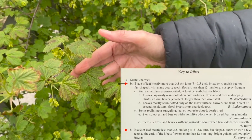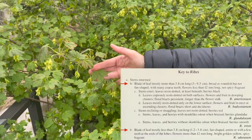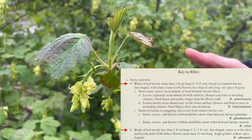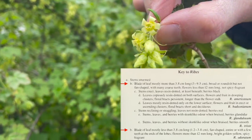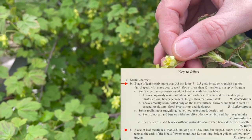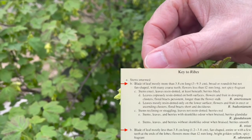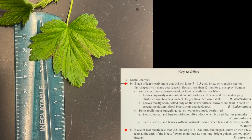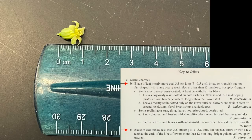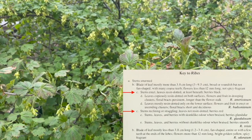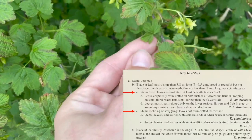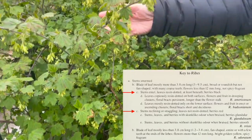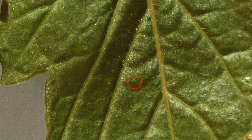Option B: blade of leaf mostly more than 3.8 centimeters long, broad or roundish but not fan-shaped, with many coarse teeth, flowers less than 12 millimeters long, not spicy fragrant. Or B: blade of leaf mostly less than 3.8 centimeters long, fan-shaped, entire or with a few teeth at the ends of the lobes, flowers more than 12 millimeters long, bright golden yellow, spicy fragrant. The leaves are mostly more than 3.8 centimeters long, are broad but not fan-shaped, and have coarse teeth. The flowers are also less than 12 millimeters long, so we will choose the first option, B. Option C: stems erect, leaves resin dotted at least beneath, berries black. Or C: stems reclining or straggling, leaves not resin dotted, berries red. You can see that our shrub has erect stems that are not reclining or straggling, and the leaves are resin dotted. Note it can be helpful to bring a hand magnifying glass whenever identifying plants.